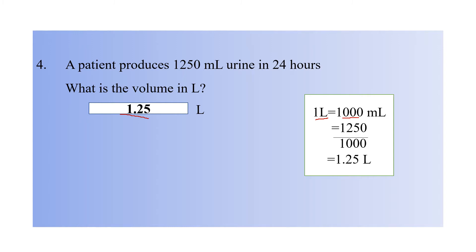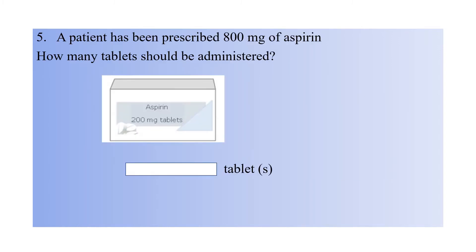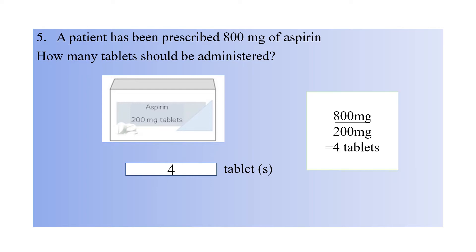Question five: a patient has been prescribed 800 mg of aspirin. How many tablets should you administer? The correct answer is 4 tablets. Using the formula 'what you want divided by what you have': you want 800 mg and you have 200 mg tablets — as shown in the picture. Calculating 800 divided by 200 gives 4 tablets.